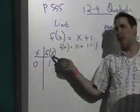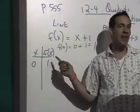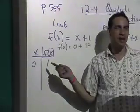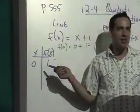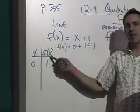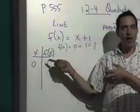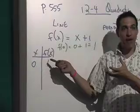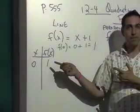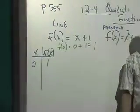Now remember: f of x does not mean f times x. It's a little confusing, but that's not what it is. This just tells you that the value of the function, or the value of the graph, at the point x, is this.